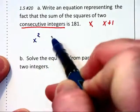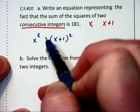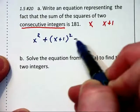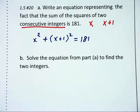We have x squared and x plus 1 squared. We want to find their sum and that should equal 181. So this is the equation they're looking for.